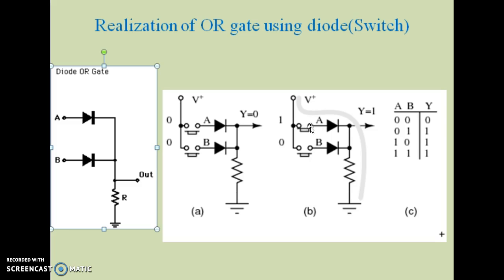In next condition, A is one and B is zero. As anode of A is connected to VCC, it will conduct. Voltage drop will take place across the resistor and output will be one, although B is open circuit. Remaining two conditions again can be studied by drawing similar diagrams.